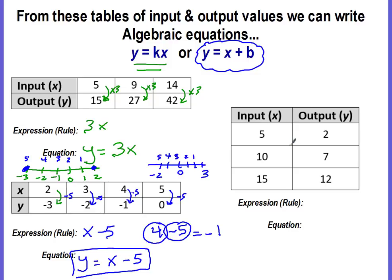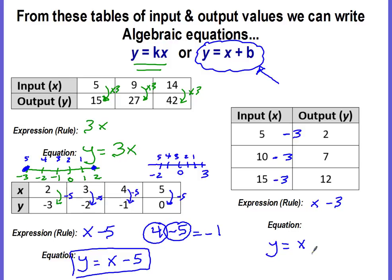Pause the video and try this one on your own, then come back and check. Going from 5 to 2, it looks like we subtract 3. Checking: 10 minus 3 is 7, and 15 minus 3 is 12 — correct. Our rule is subtract 3 from the x value. Using the additive equation: y equals x minus 3.